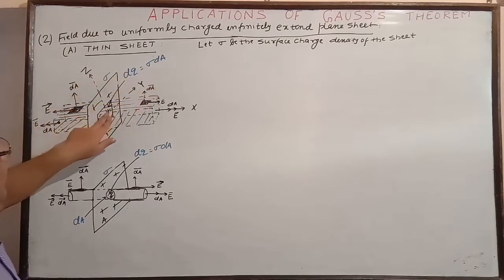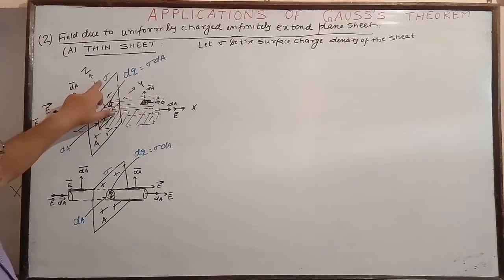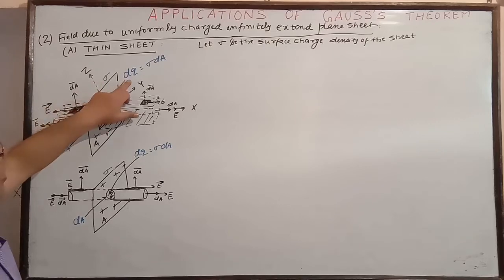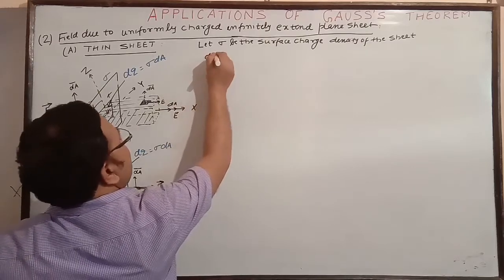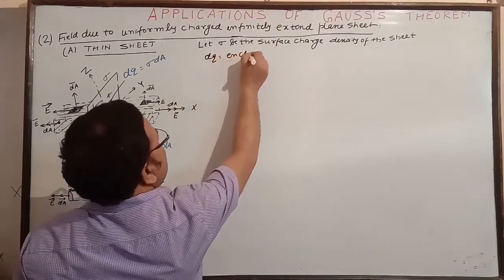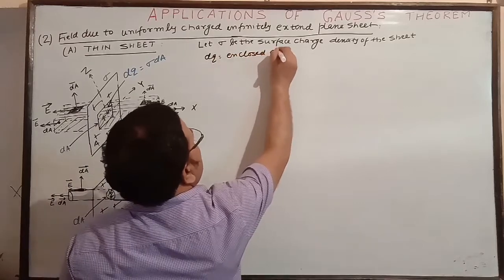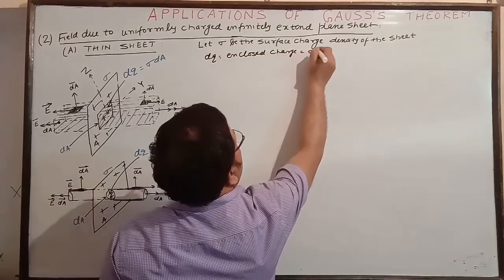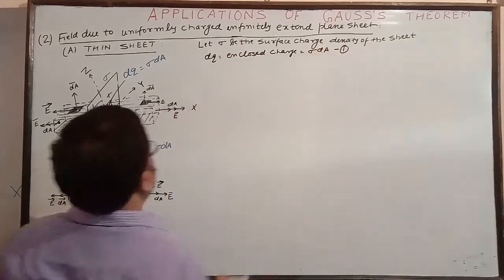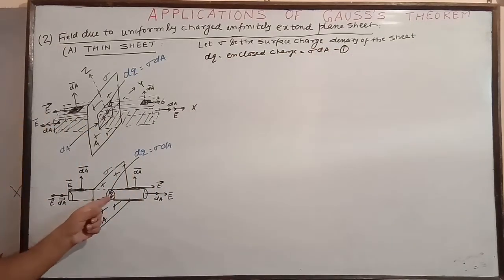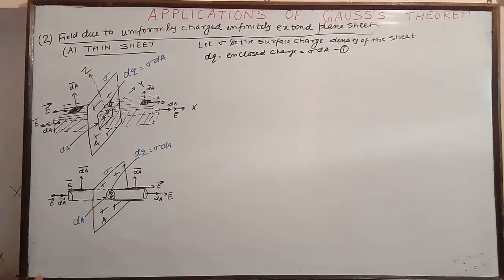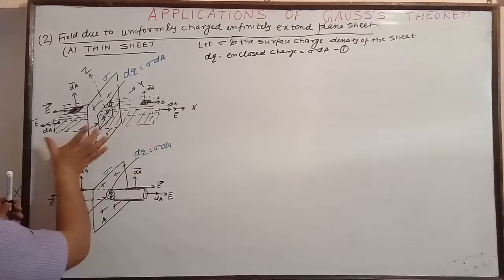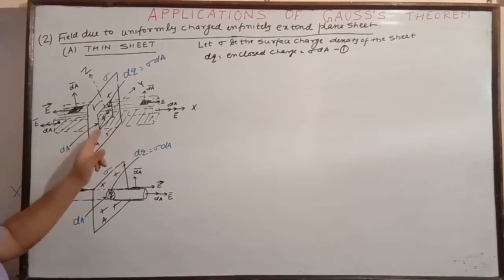The enclosed zone has area dA and surface charge density sigma, so the total charge enclosed is dq = sigma × dA. This is equation number one. Here also the same applies — dA is the area, sigma is the charge density — and can be used for both sides since it is a thin sheet.